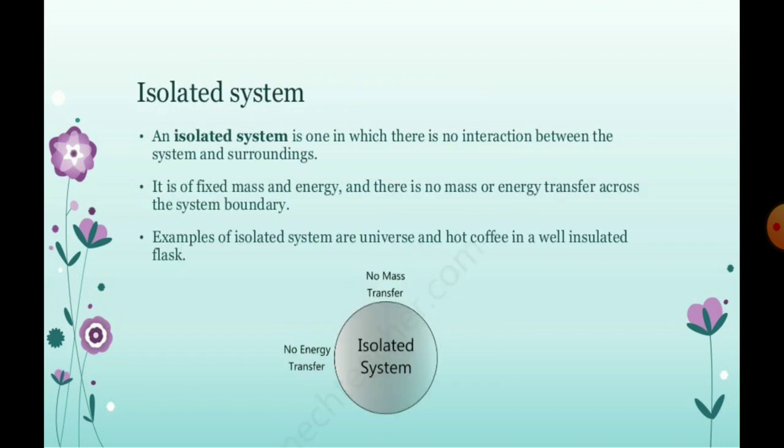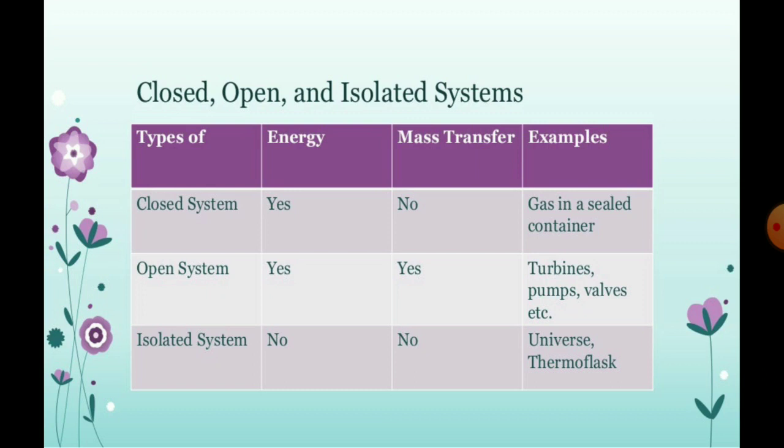What is isolated system? An isolated system is one in which there is no interaction between the system and surrounding. It is considered under the closed compact vessel. It is of fixed mass and fixed energy. There is no mass or energy transfer across the system. The example of isolated system is the universe and the hot coffee in the well insulated flask.